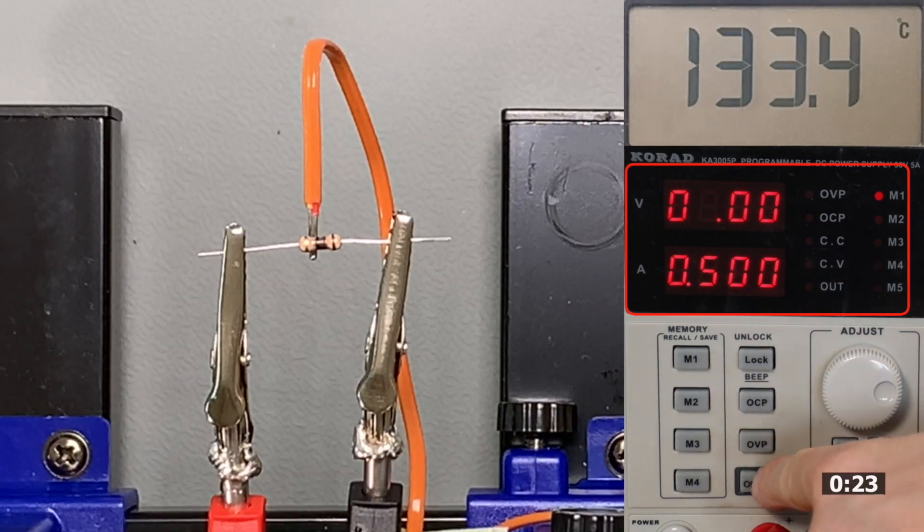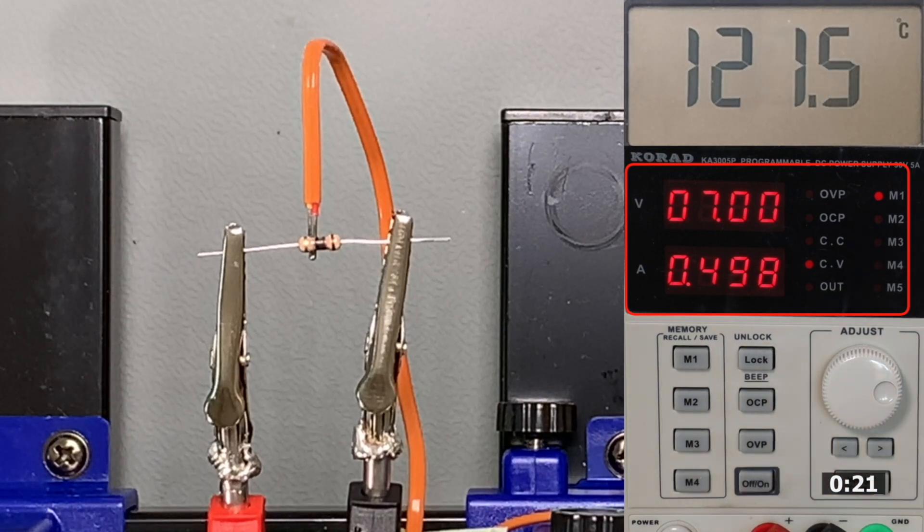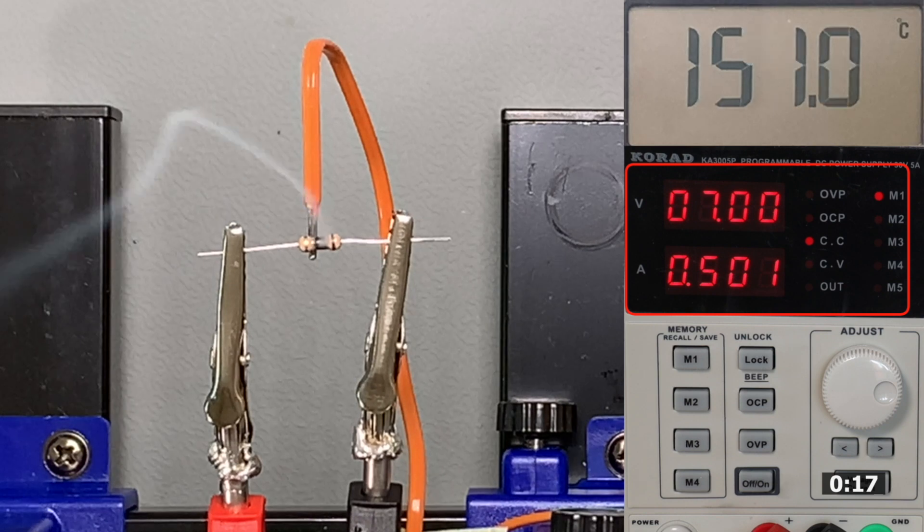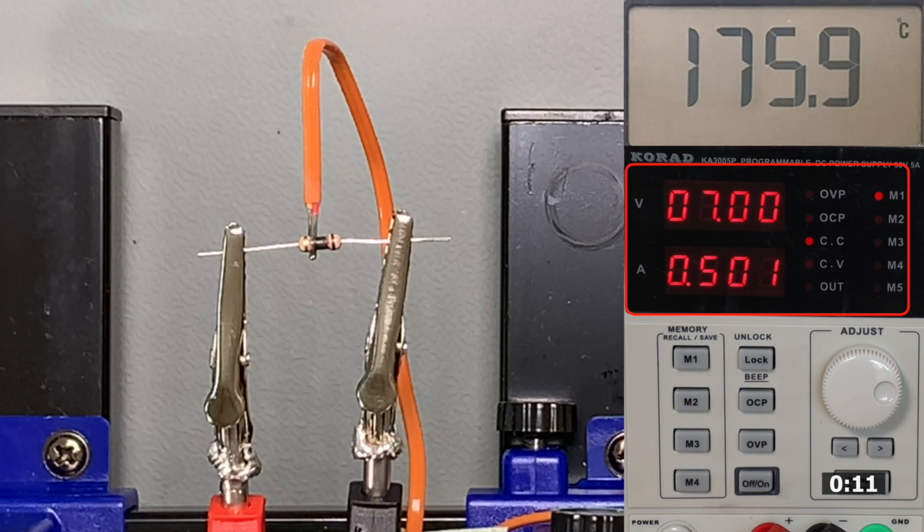We now continue with 7 volts and with a current we are now already at half an amp. From the smoke you can clearly see that the resistor doesn't feel very well at all now. This is also reflected by the temperature increase to almost 180 degrees centigrade.